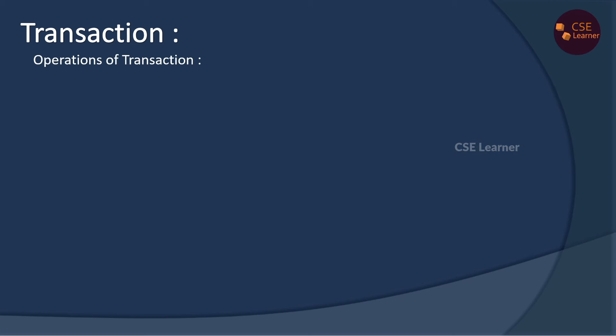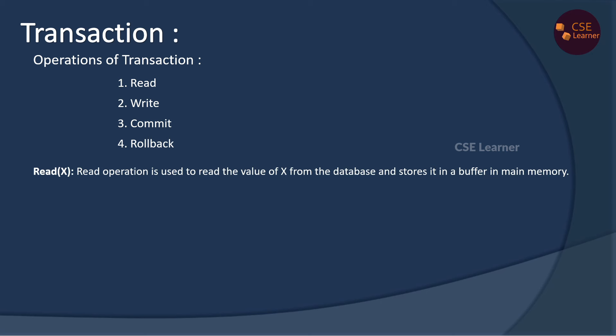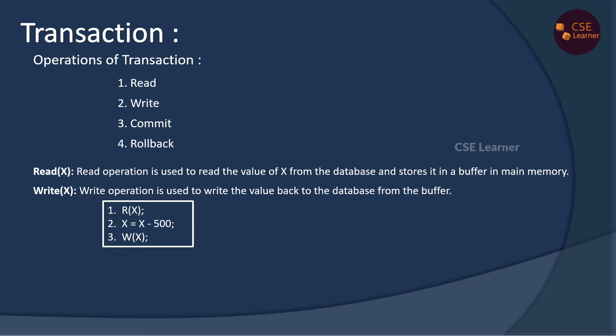What operations do you need to use? Read, Write, Commit, Rollback — 4 operations. Read of X: X is read from the value in the database into main memory, using the buffer to store. Write of X: the value is written back to the database. In this example, R of X reads the value from the database.